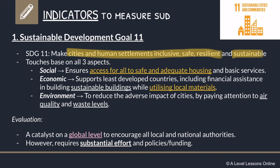When you look at SDG 11, it touches all three aspects of sustainability. In terms of social, it ensures access to adequate housing for everyone — your basic human needs. For the economic aspect, it involves building sustainable buildings in cities as well as utilizing local materials to boost local production and the local economy. Lastly for environment, it aims to reduce air pollution and waste levels. SDG 11 essentially acts as a target for cities to try and meet across all three pillars.